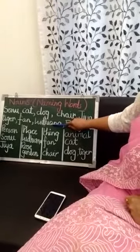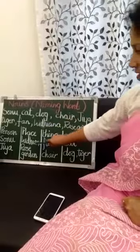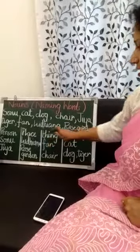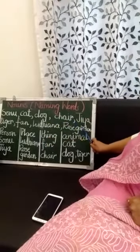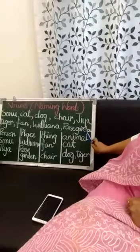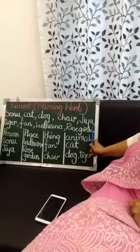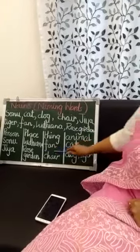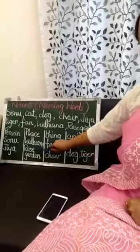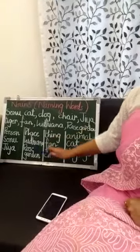We live in Ludhiana, so it will come here. Ludhiana. Next is Rose Garden — it is also a name of a place. Rose Garden. So students, this is all about Nouns. Thanks and take care.